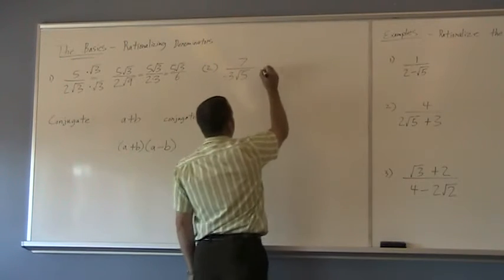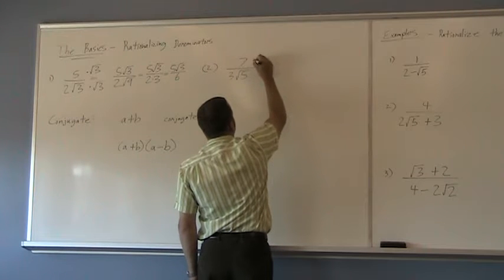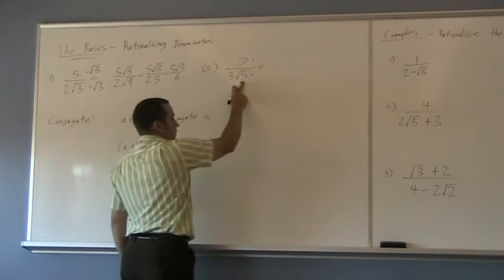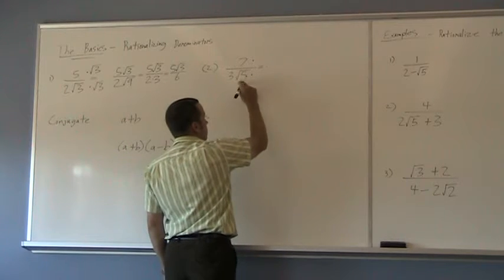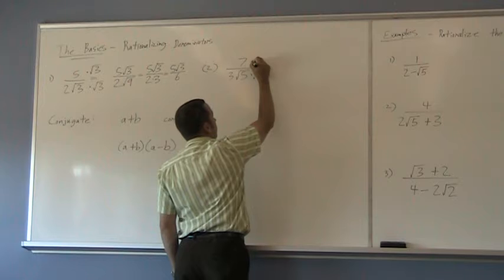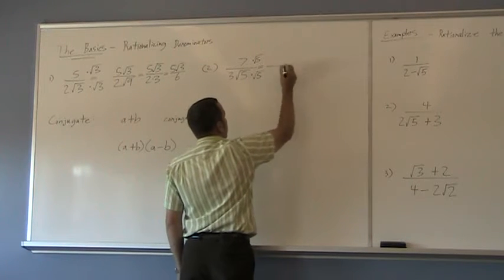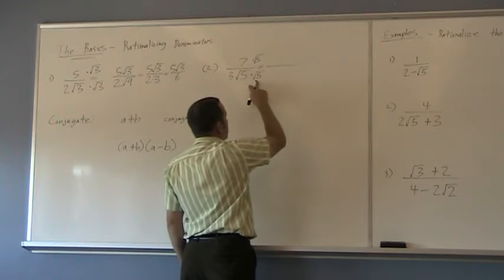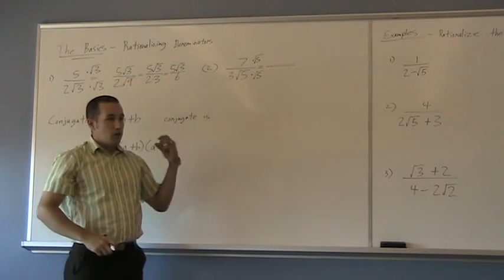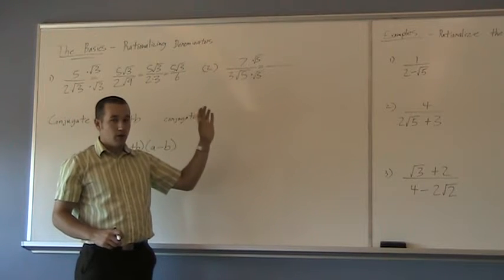One more example here. Again, multiplying top and bottom by the irrational number on the bottom. So, the irrational number here is √5. So, I multiply both the top and the bottom by √5. And I end up with 3 times the square root of 25. You'll notice a pattern here. You do not have to write the square root of 25 every time if you do not want to.